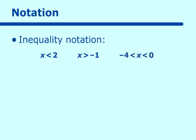We could also do these with equal to's. We could say x is less than or equal to 2, or x is greater than or equal to negative 1, or x is between and equal to both negative 4 and 0.